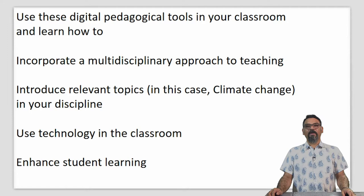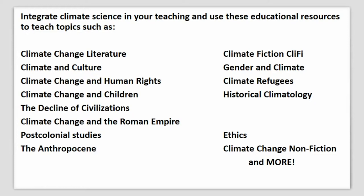How do you introduce relevant topics — in this case climate change — in your discipline teaching? How do you effectively use technology in your classroom and how do you enhance your student learning? You can integrate climate science in the teaching of humanities subjects and use educational resources to teach topics such as climate change literature, climate fiction or cli-fi, climate and culture, gender and climate, climate change and human rights, climate refugees, climate change and children, historical climatology, the decline of civilizations due to climate change such as the Roman Empire, postcolonial studies, ethics, the idea of the Anthropocene, climate change non-fiction, and many more topics.